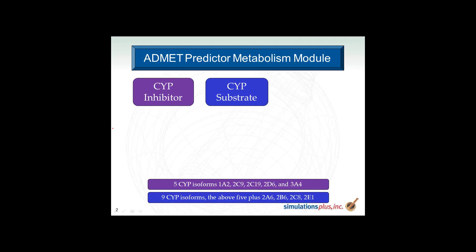We also have nine models that predict if a molecule is a substrate of a particular isoform of cytochrome P450. These nine models include the five CYP isoforms and in addition 2A6, 2B6, 2C8, and 2E1.